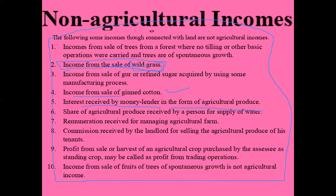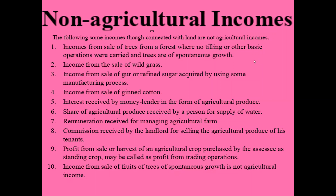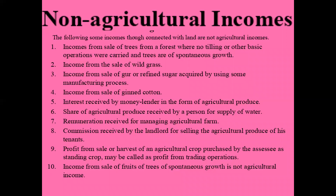You should be able to understand that agricultural incomes are fully exempt from tax, whereas non-agricultural incomes are taxable. For agricultural incomes, we have to fulfill three conditions: the land should be situated in India; agricultural activity should have been performed on that land; and income or revenue should have been generated from the land. These are the three conditions to get exemption for agricultural income.